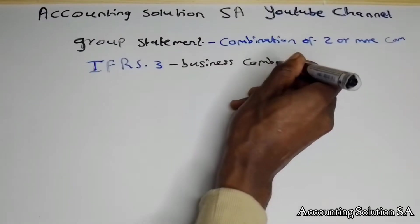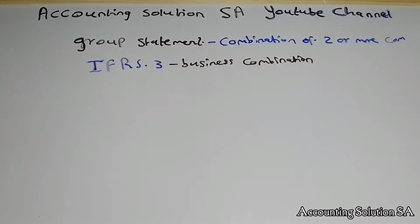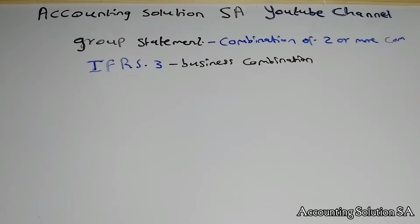Business combination — all requirements needed before businesses combine into groups have been laid down under IFRS 3. Remember, when we are dealing with two or more entities, we must have an acquirer, which is the business that has purchased the other business, and we also have an acquiree, which is the business that has been purchased. This is the framework and we have to apply it.